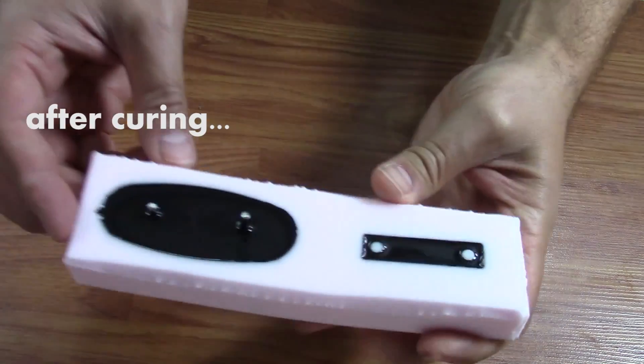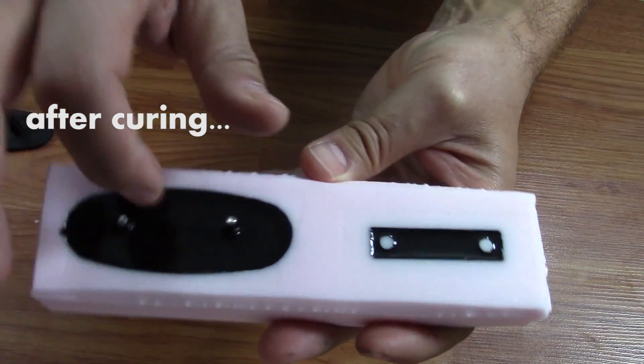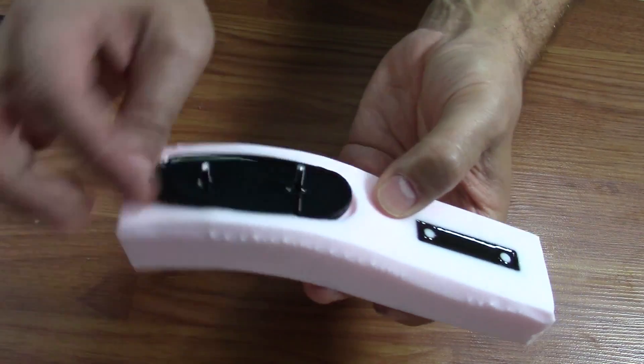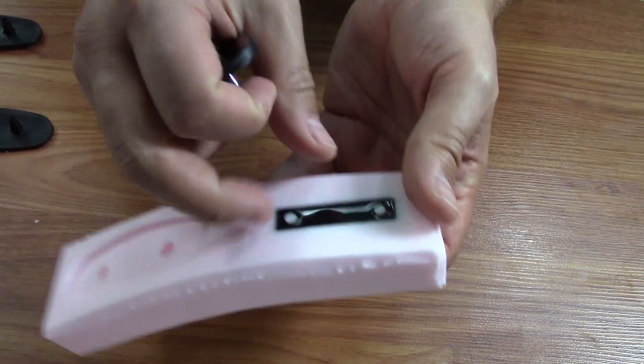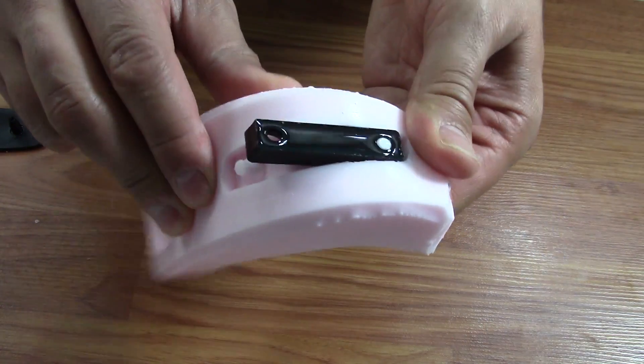Once the resin was cured after about 20 minutes, we were able to pull them out of the mold and we now had perfect replicas that could be used down the road in the event that these brackets would fail.